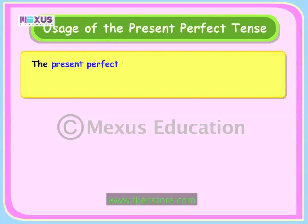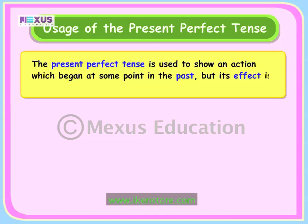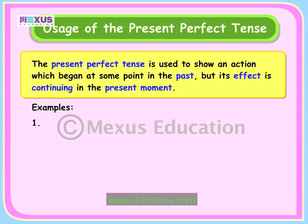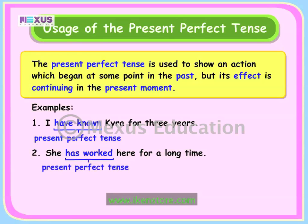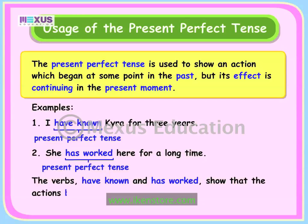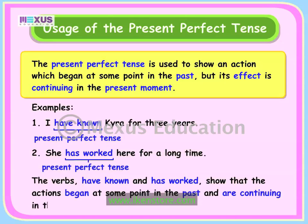The present perfect tense is also used to show an action which began at some point in the past but whose effect is continuing in the present moment. Look at the following examples carefully. In the first example, 'I have known Kyra for three years' — the main verb 'known' is used with the helping verb 'have'. In the second example, 'She has worked here for a long time' — the main verb 'work' is used with the helping verb 'has'. The verbs 'have known' and 'has worked' show that the actions began in the past and are continuing in the present moment.